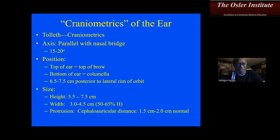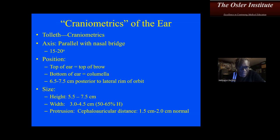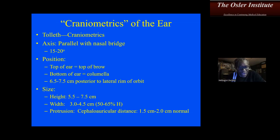Moving on to craniometrics of the ear. The axis of the ear is generally parallel with the nasal bridge but angled about 15 to 20 degrees — relevant when doing ear reconstruction and deciding framework orientation. The top of the ear aligns with the top of the brow, the bottom corresponds to the level of the columella on the nose, and the ear is positioned approximately 6.5 to 7.5 centimeters posterior to the lateral orbital rim. These are important anatomic landmarks for positioning a cartilaginous framework in ear reconstruction.